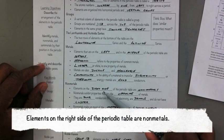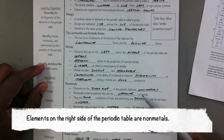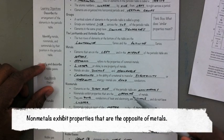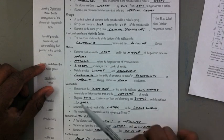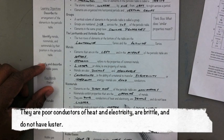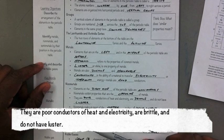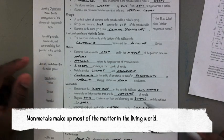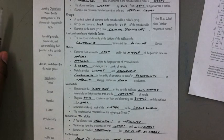Elements on the right side of the periodic table are non-metals. Non-metals exhibit properties that are opposite of metals. They are poor conductors of heat and electricity, and they are brittle, which means they're easily broken, and they do not have luster, which means they are not shiny. Non-metals make up most of the matter in the living world, such as in people, plants, and other animals.